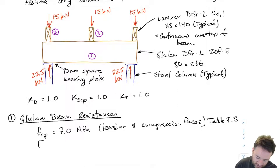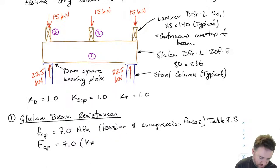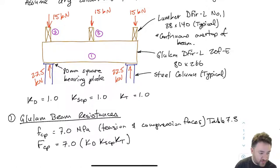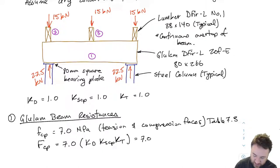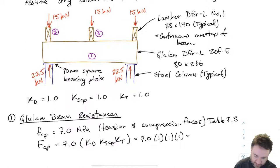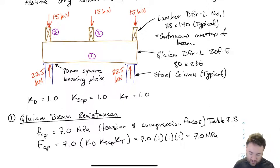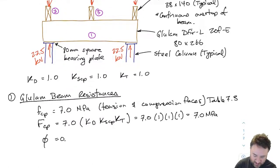I can calculate my capital FCP, the modified strength, which is modified by KD, KS, and KT. There's no KH in this equation for compression perpendicular because by definition for bearing I can only have one element — I can't have multiple elements sharing a bearing surface. I end up with 7.0 MPa and phi equals 0.8, which is the phi factor for bearing resistance.